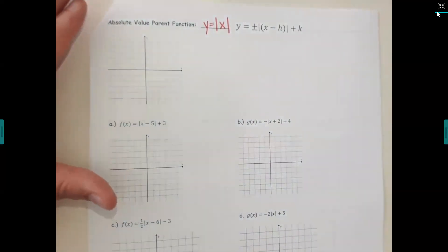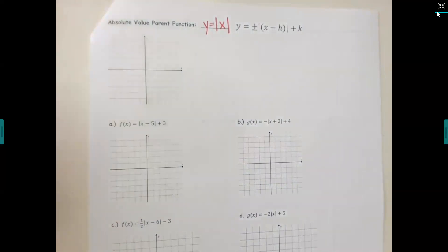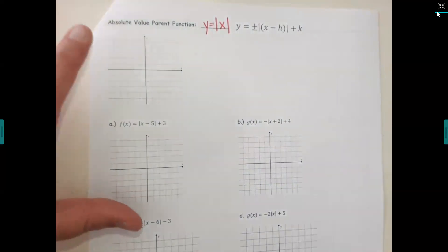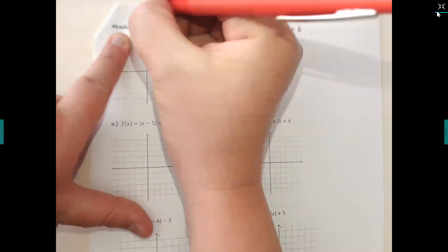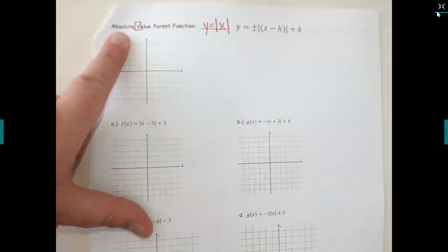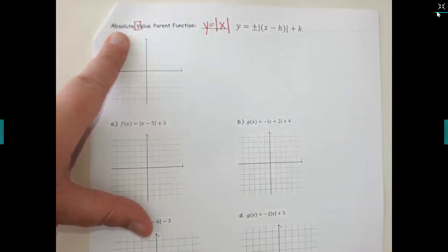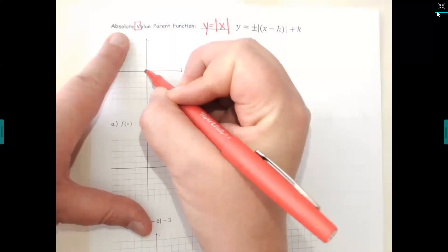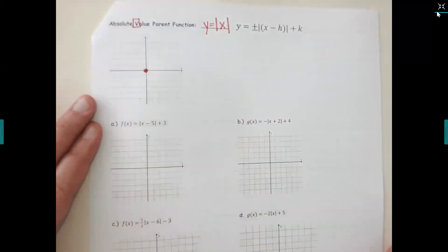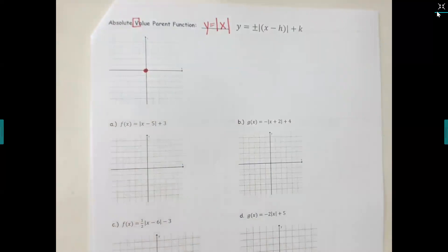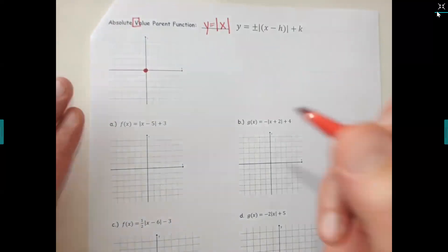Absolute value is shaped like the letter V — box your V, that's the shape for absolute value. All your parent graphs are going to start at zero zero, so put a dot at the origin.